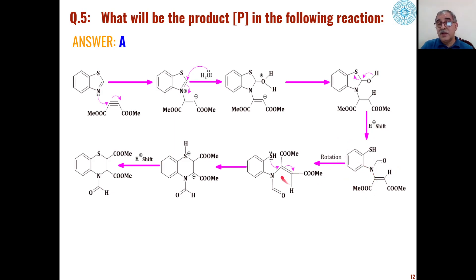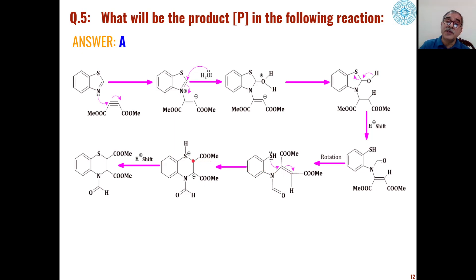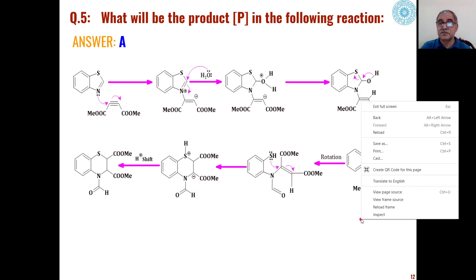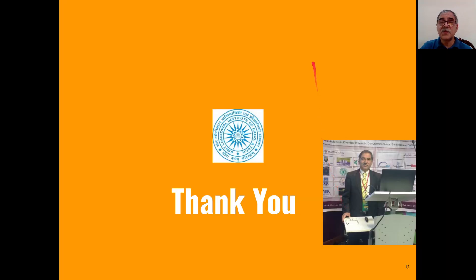This intermediate undergoes rotation and then cyclization, because diols can very easily add to a carbon-carbon double bond. They undergo addition to the carbon-carbon double bond leading to cyclization with formation of a six-membered ring. A hydrogen shift from sulfur to this carbon then leads to the formation of product A out of the four choices. Thank you very much.